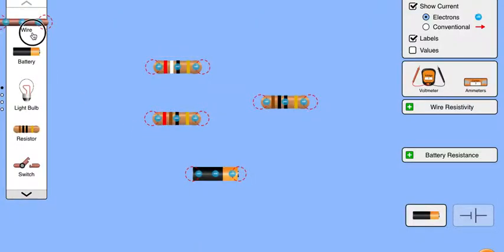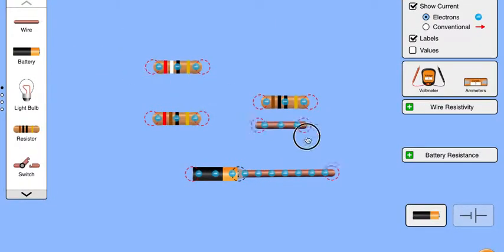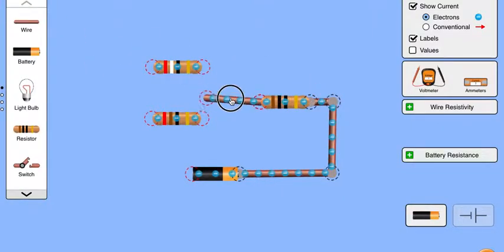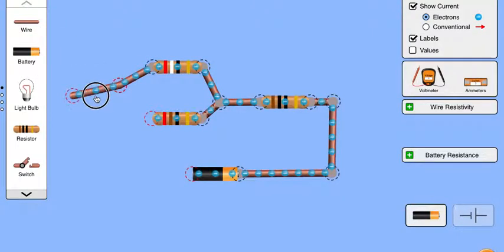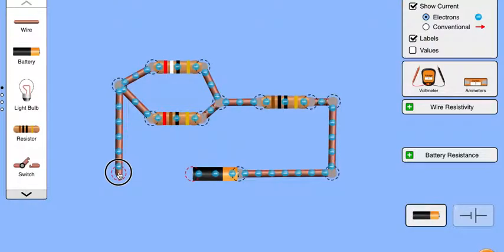Now I just need to connect these with wires. So I'm going to grab a wire right there. I'm going to try to make it look pretty. You just drag these and click them into things and it should work. I'm going to make it kind of look like an actual circuit.